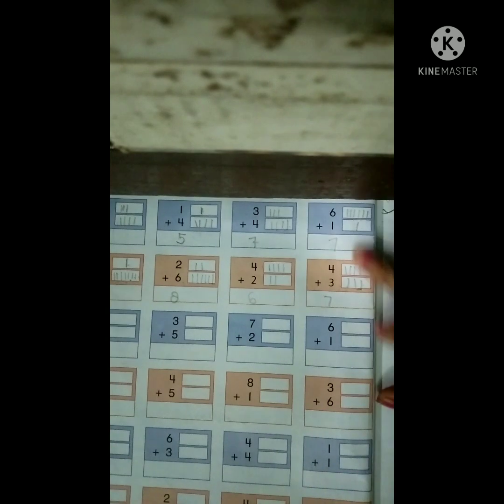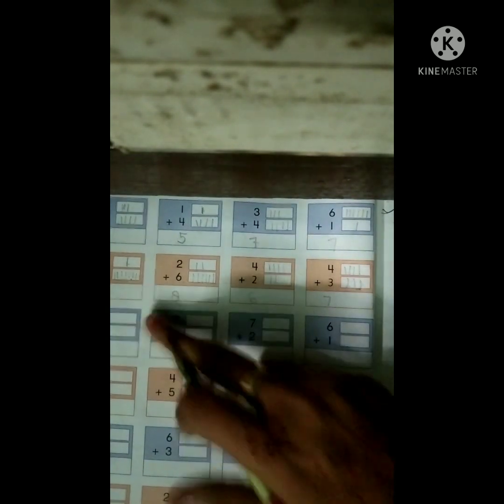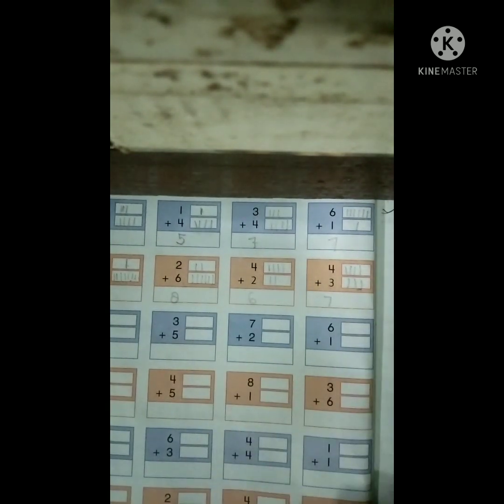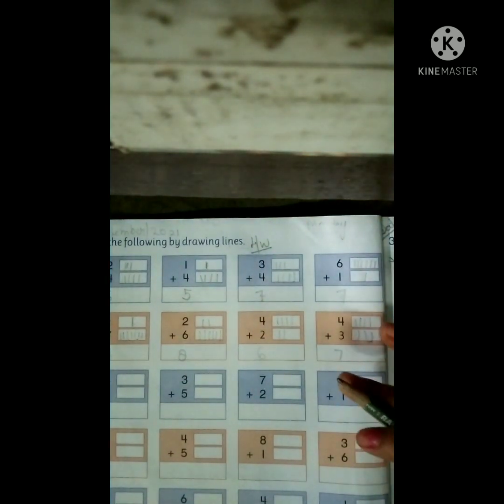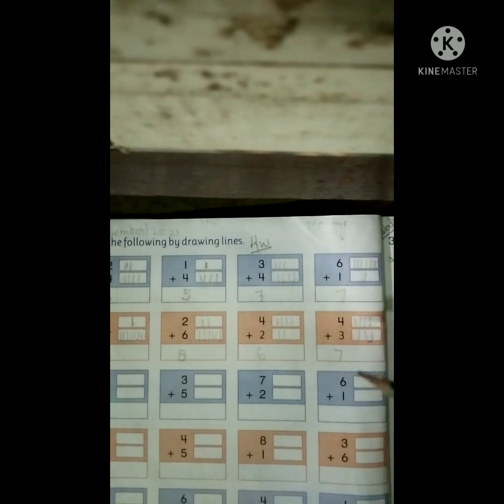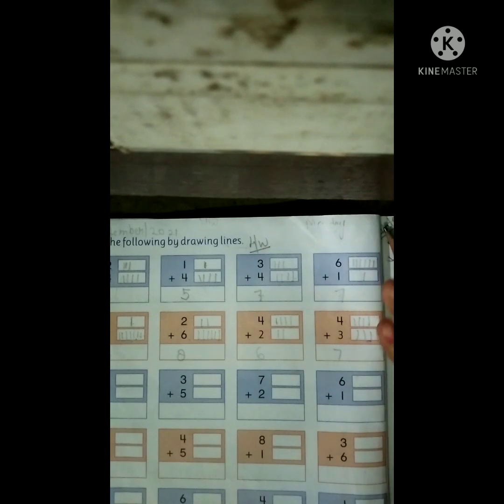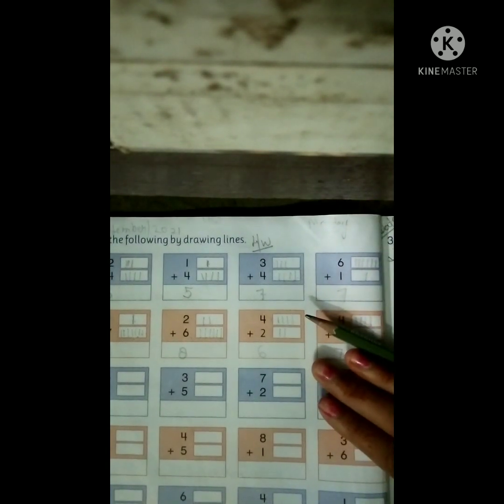So students, I have shown you two columns. The remaining five problems — you have to do them on your own. This is your homework. Just as I have shown you, step by step: first look at the numbers, then draw lines, then count the lines together and write the answer here. Same process you also have to do, beta. It's very simple. Complete this in your book.